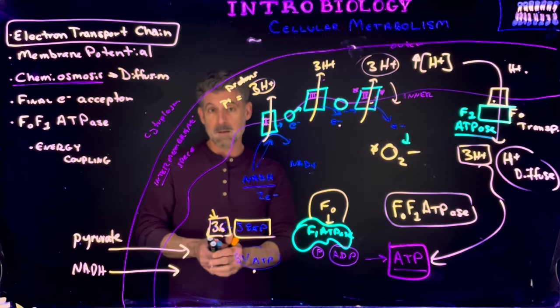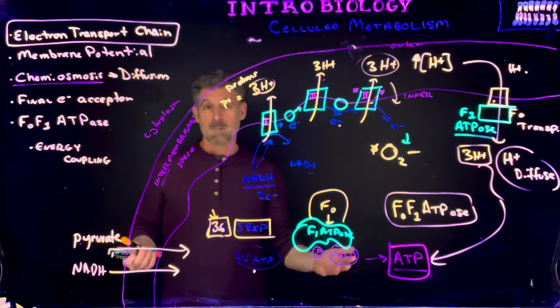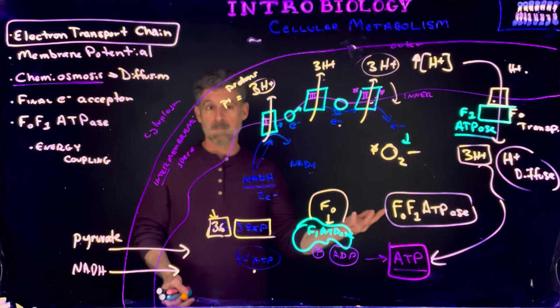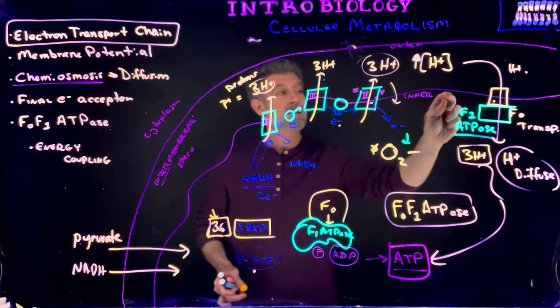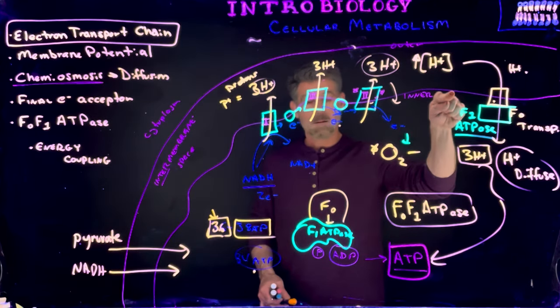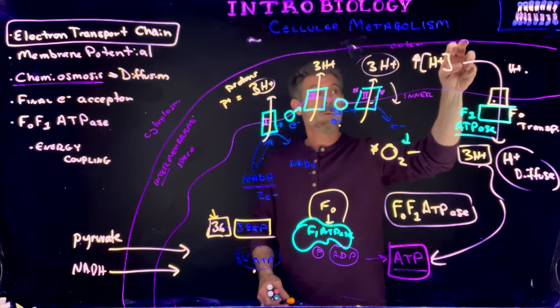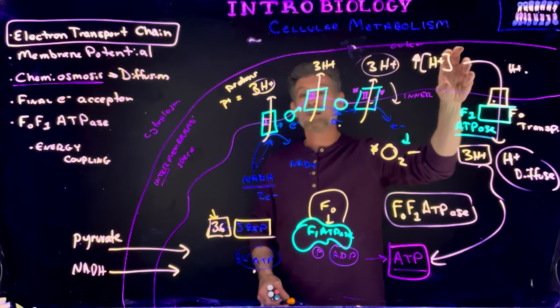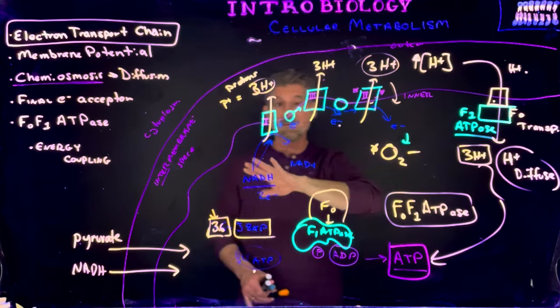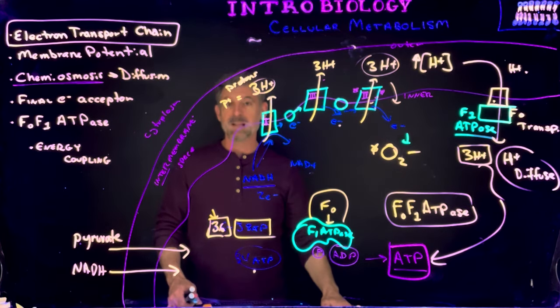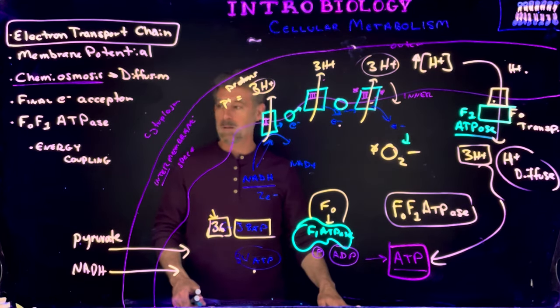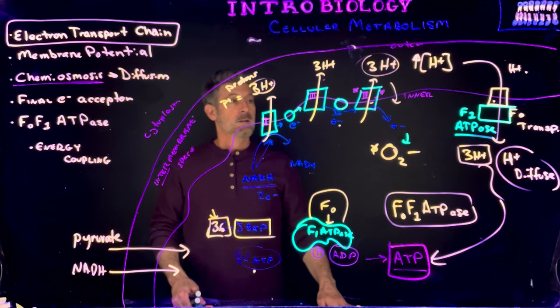But bacteria don't. They just get the full 38 because they don't have to deal with this. They don't have mitochondria. So this would be the bacterial cell membrane in bacteria, and this would be a cell wall, and this would be a space in between them. So bacteria do the same exact thing, just in a slightly different way. The space is a little bit different.